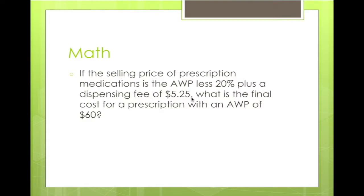If the selling price of a prescription medication is the average wholesale price less 20% plus a dispensing fee of $5.25, what is the final cost for a prescription with an average wholesale price of $60? We'll set this up as line equals line — our known and our unknown. Our known is $60, and don't forget your units — they're very important to help you keep track.